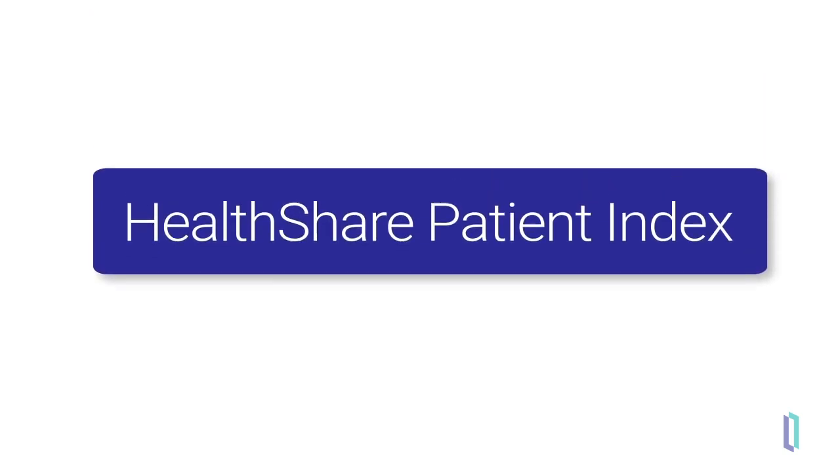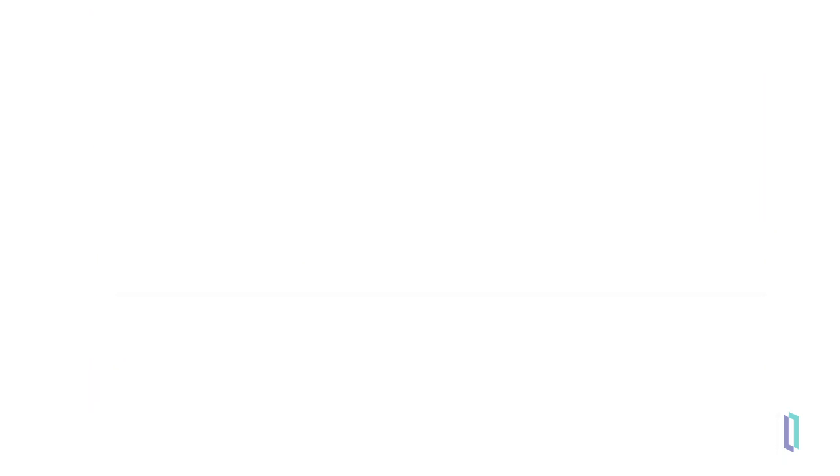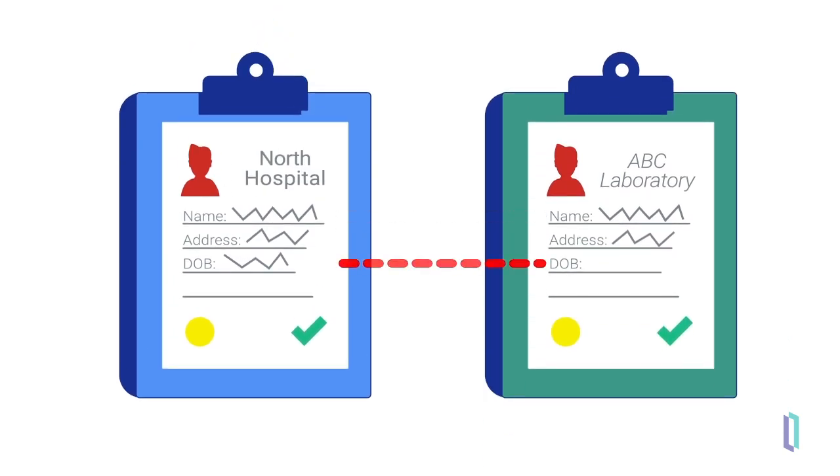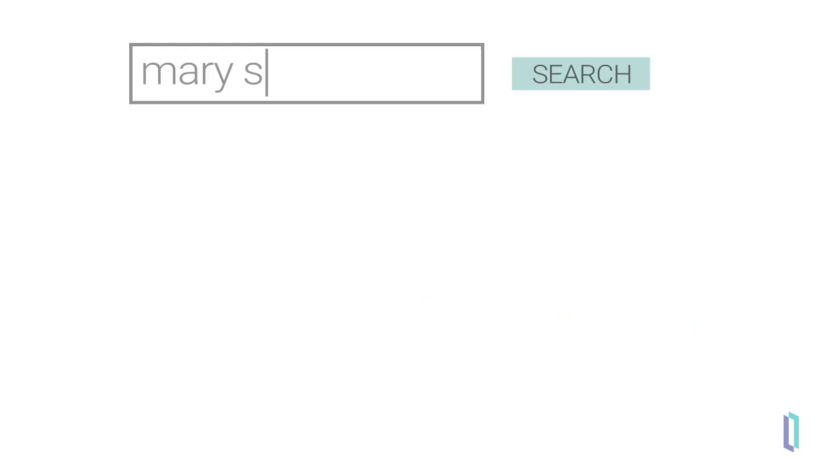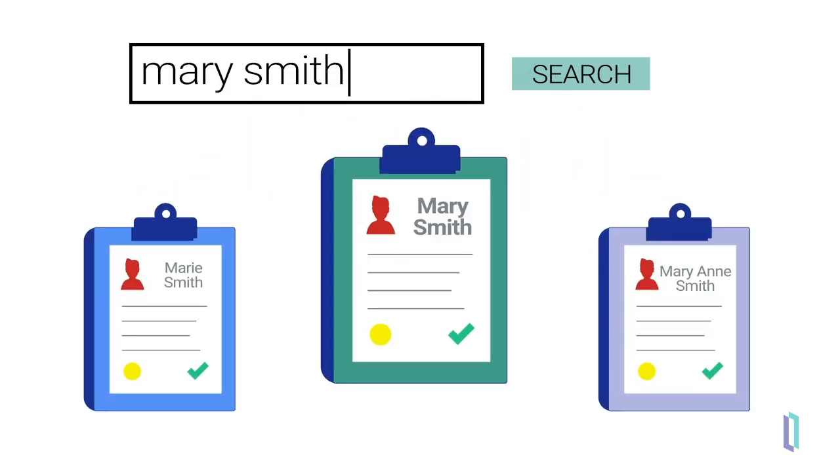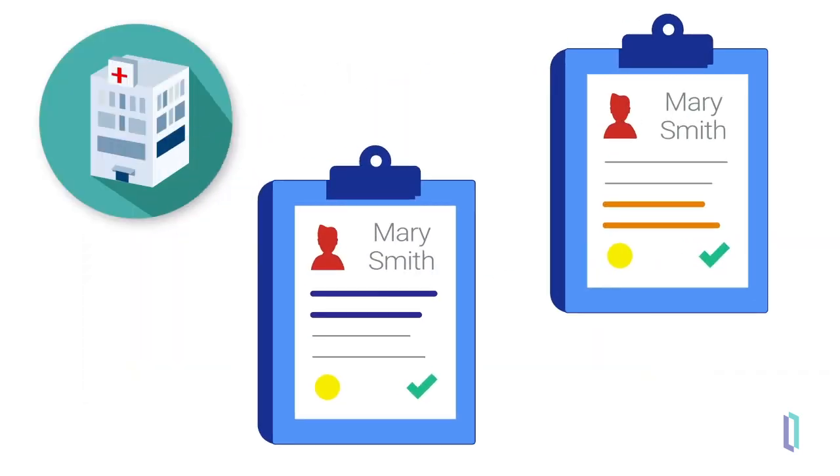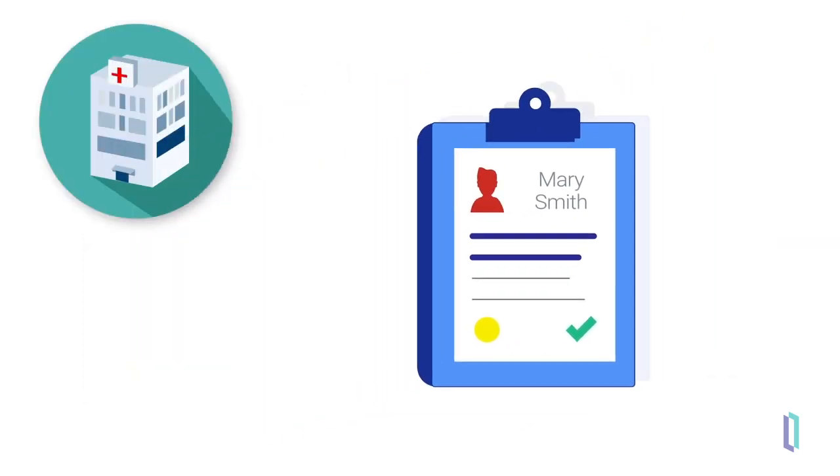HealthShare Patient Index as an MPI has three basic functions. One, comparing and linking demographic data from two healthcare organizations. Two, returning and ranking results in response to a patient search. Three, identifying duplicates from the same source for further action.